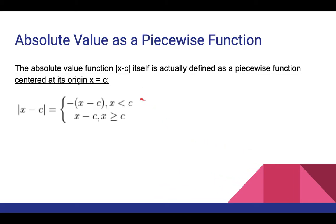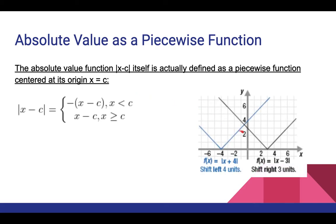The absolute value can be written as a piecewise function. Looking at the graph of an absolute value function, it is two lines — one defined to the left of the origin and one to the right. The absolute value function |x minus c| is defined as a piecewise function centered at x equals c: for x less than c, it equals negative x minus c (since x minus c is negative, multiplying by another negative gives positive values); and for x greater than or equal to c, it equals x minus c. For example, f of x equals |x plus 4| shifts the origin 4 to the left, while |x minus 3| shifts it 3 to the right.